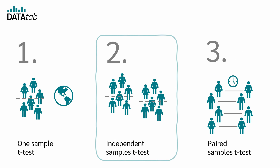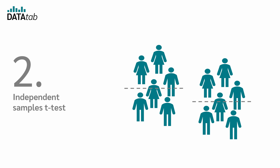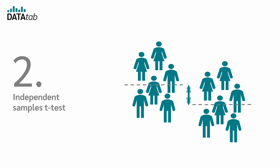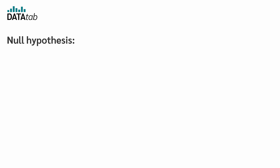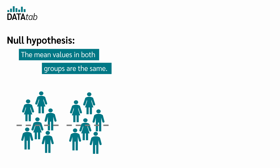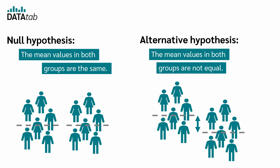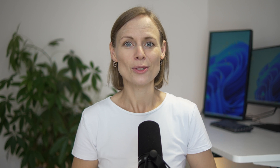When do we use the independent samples t-test? We use the t-test for independent samples when we want to compare the means of two independent groups or samples and determine if there is a significant difference between these means. The null hypothesis in the independent t-test is that the mean values in both groups are the same — so there is no difference between the two groups.